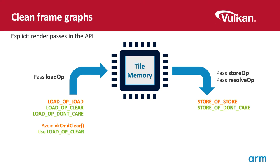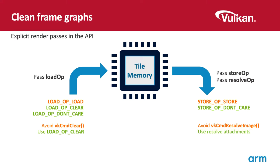The store op defines what happens to each attachment at the end of the render pass. A store will write the content back to memory, and a don't care will simply discard the content. The resolve op defines how multi-sample attachment resolve is handled. If you are using multi-sampling, it is critical to resolve attachments to a single sample before writing them back to memory. Storing all those samples is a high-bandwidth consumer, so always use a resolve op on the render pass, not a command-based resolve. For this scenario, also remember to set the store op on the multi-sampled attachments to don't care.